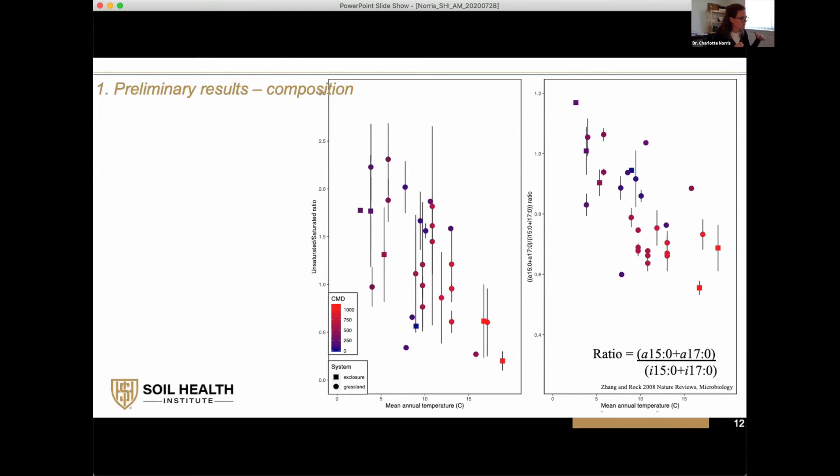You've got more of the double bonds associated with the biomarkers in the cooler soils compared to the warmer soils. These are still the unmanaged plots. We've got this change in ratio. This one is incorporating all the markers from 14 to 20, those that are unsaturated and saturated.